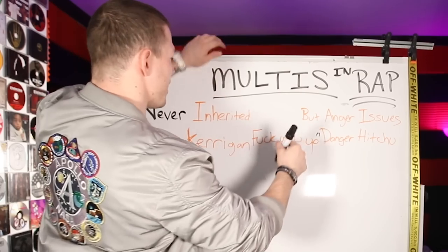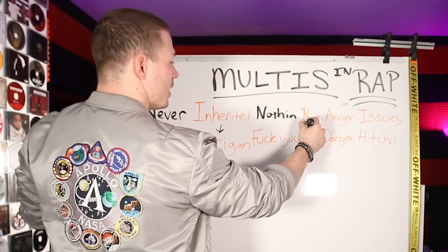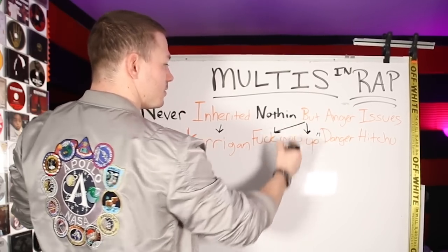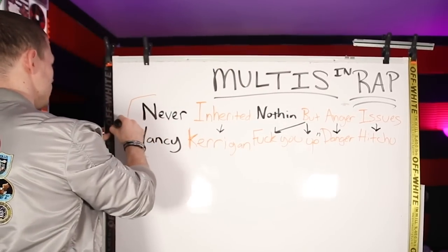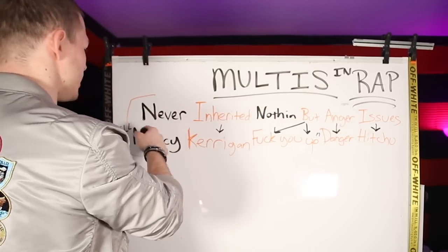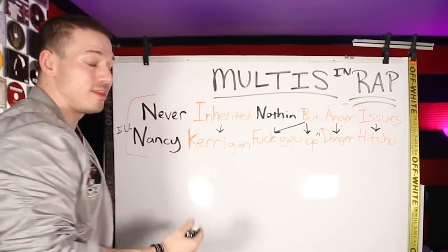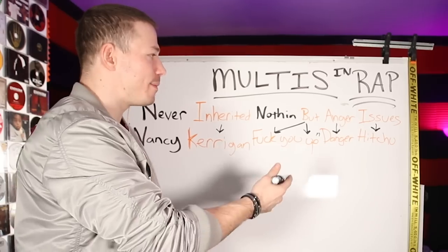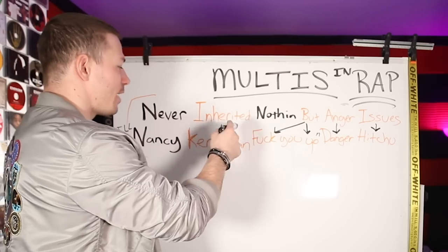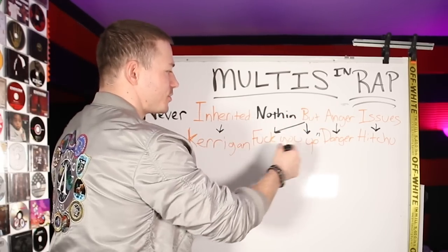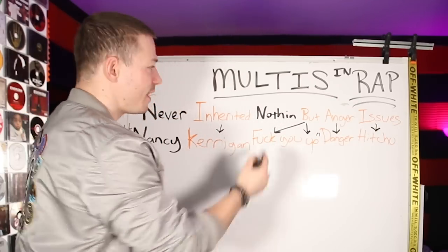I didn't rhyme anything with 'nothing' — that's fine, it doesn't matter. But look at everything that does rhyme. 'But' goes with 'up,' 'anger' / 'danger,' 'issues' / 'hit you' — all rhyming. So putting it together: 'Never inherited nothing but anger issues / All Nancy Kerrigan, fuck you up and danger hit you.' We see rhyme here, rhyme here, rhymes here, rhymes here — these are multi-syllable rhymes because we're rhyming the syllables: anger / danger, issue / hit you, inherited / Kerrigan. The others would be considered internal rhymes. That's how you write a multi: write your first line, start at the end, jump back, rhyme in the middle, then fill it in.